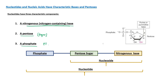Phosphate is also called phosphoric acid — not phosphorous acid. So the three components of a nucleotide are: nitrogenous base, pentose sugar, and phosphate.